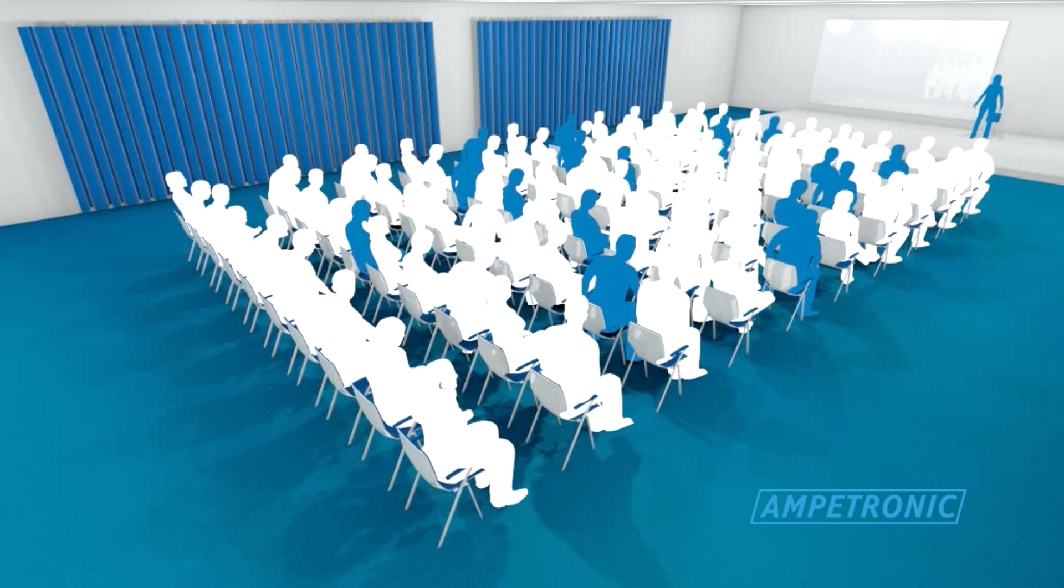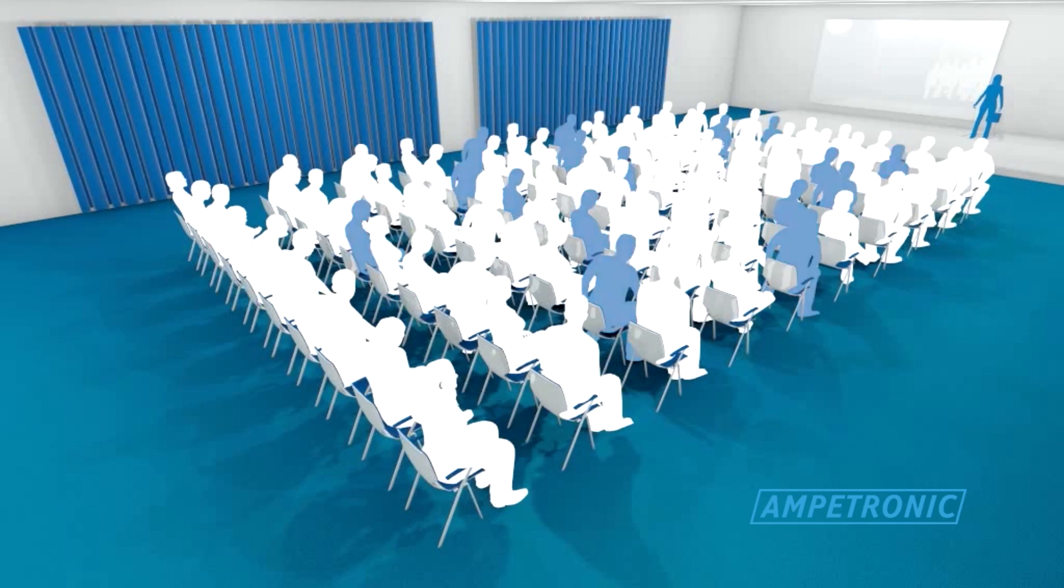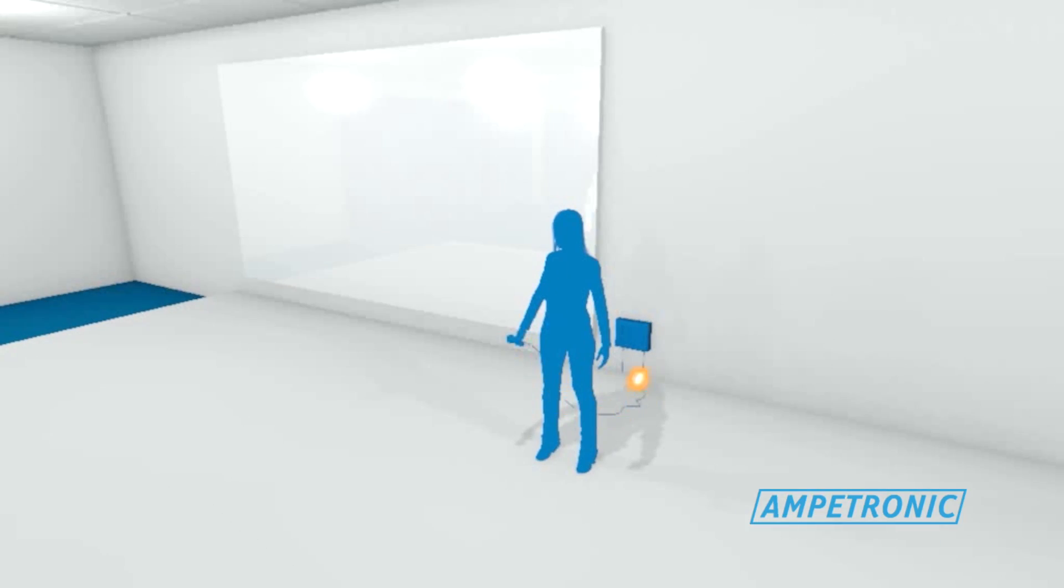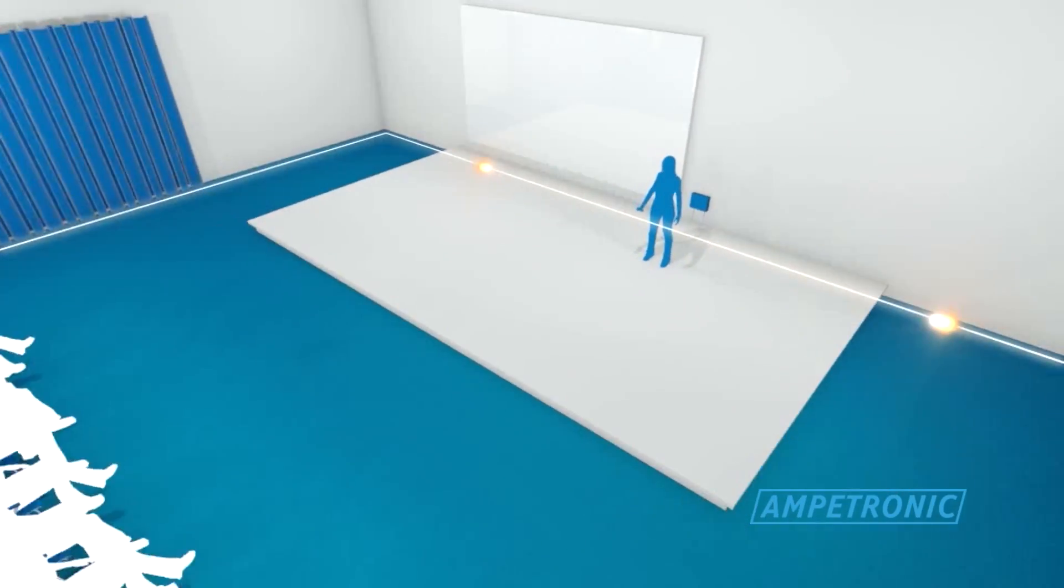The simplest form of area coverage hearing loop system is a perimeter loop, where the cable is laid around the perimeter of the room to cover the entire area.